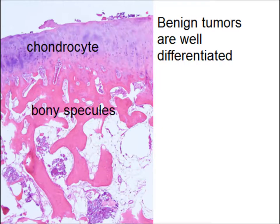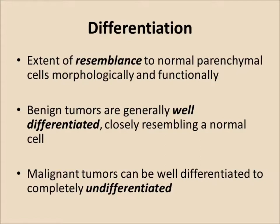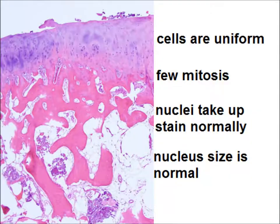Benign tumors are well differentiated — for example, osteochondroma is made of chondrocytes and bone. The extent of resemblance to normal parenchymal cells morphologically and functionally is called differentiation. Benign tumors are well differentiated, while malignant tumors range from well differentiated to poorly differentiated. Cells of benign tumors are uniform, have few mitoses, nuclei take up stain normally, and nucleus size is normal.